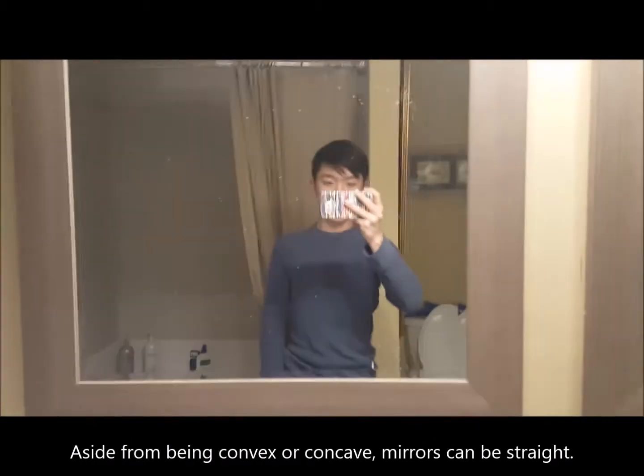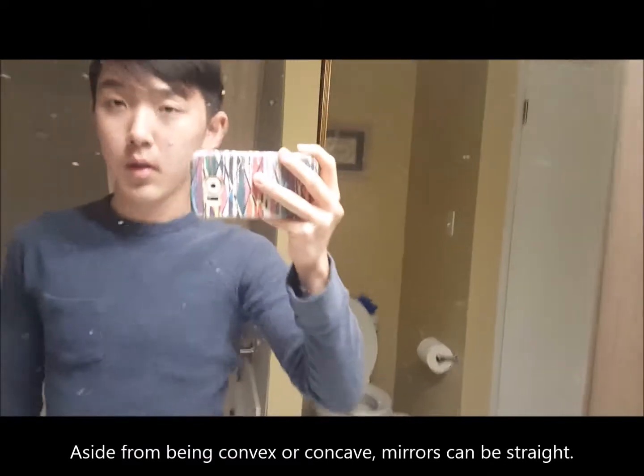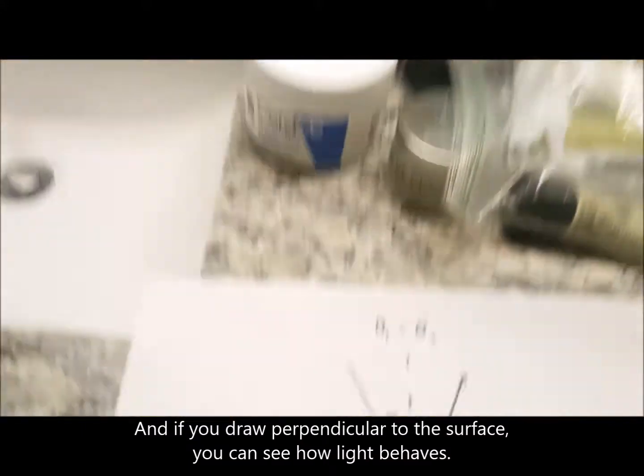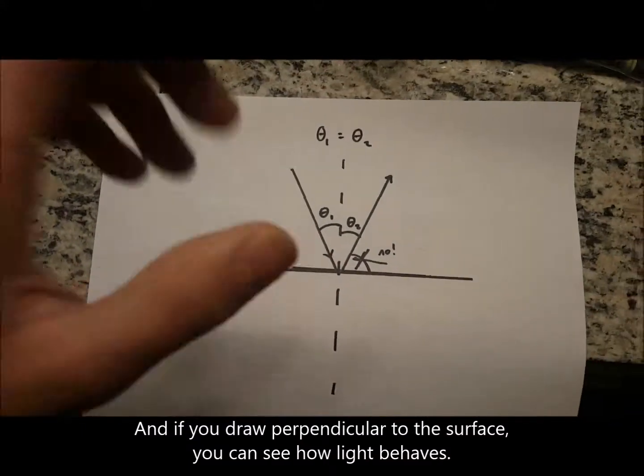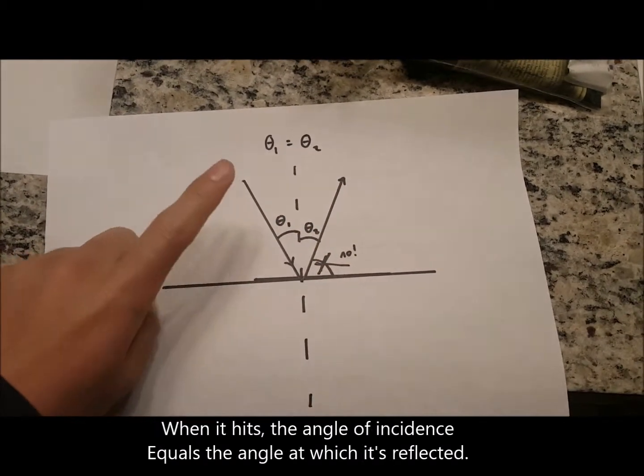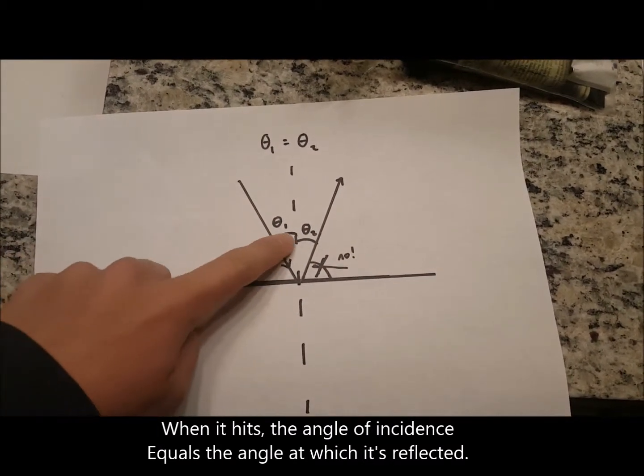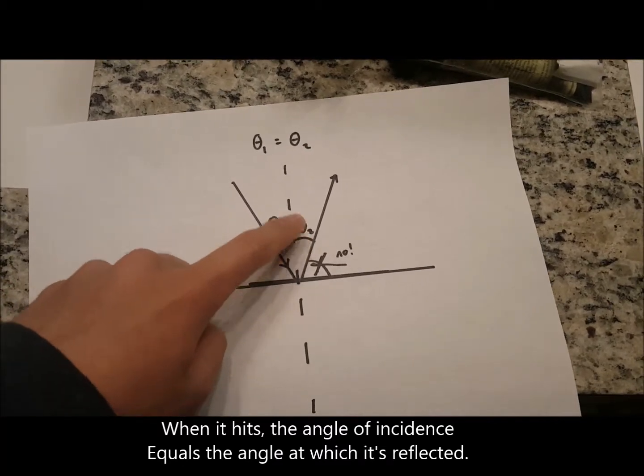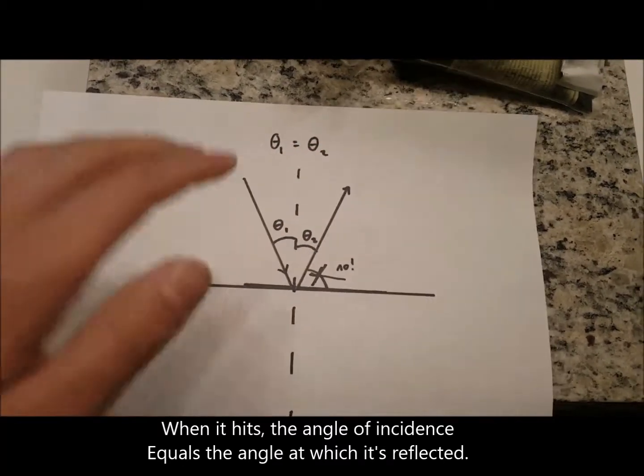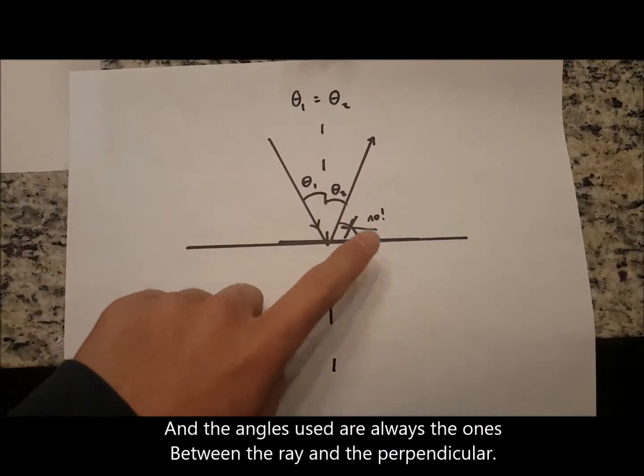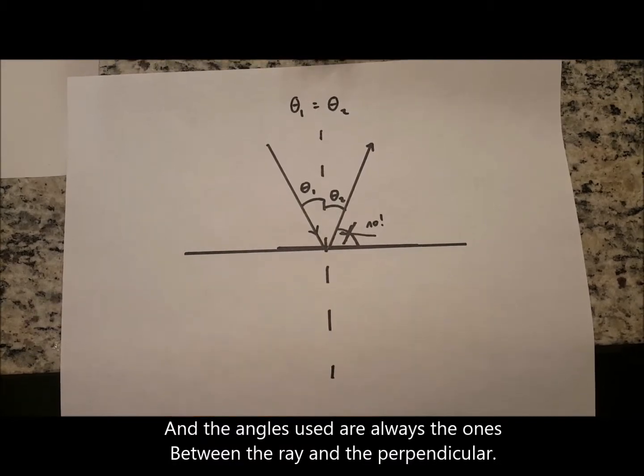Aside from being convex or concave, mirrors can be straight. And if you draw perpendicular to the surface, you can see how light behaves when it hits. The angle of incidence equals the angle at which it's reflected. And the angles used are always the ones between the ray and the perpendicular.